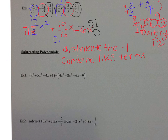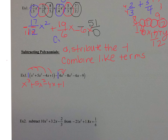Here's what I mean by distributing the negative one. You have these parentheses, and there's really a 1 in front of the first set of parentheses and a negative 1 in front of the second set because it's minus. When you distribute the 1, you get the same thing: x cubed plus 5x squared minus 4x plus 1. Now distributing the negative 1: negative 1 times 4x cubed is negative 4x cubed; negative 1 times negative 8x squared is positive 8x squared; negative 1 times negative 6x is positive 6x; and negative 1 times negative 9 is positive 9. Now we combine like terms.